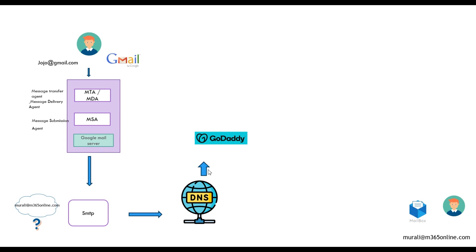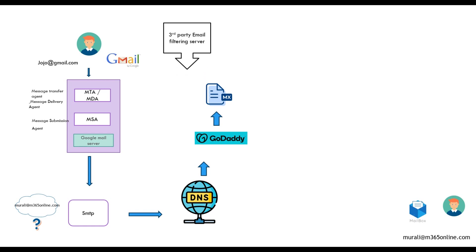The email server now knows where to route the email because the MX record has all the details of where to route. So Google's mail server knows where the email should be routed. The MX record tells the email server where to route emails for a particular domain. Now we have two scenarios: the MX record can point to a third-party email filtering server like Barracuda or Sophos, or it can point directly to Exchange Online Protection.